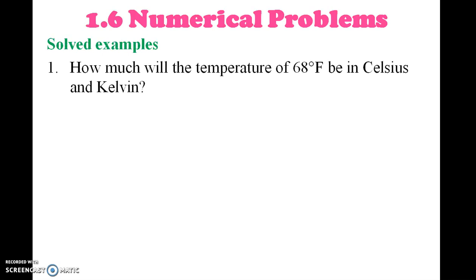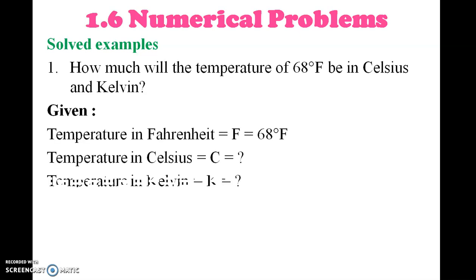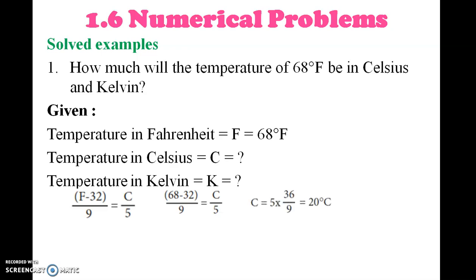Numerical problem: How much will a temperature of 68°F be in Celsius and Kelvin? Solution: using the formula (F − 32) / 9 = C / 5. So (68 − 32) / 9 = 36/9, and C = 5 × 36 / 9 = 20 degrees Celsius. For Kelvin: K = C + 273 = 20 + 273 = 293 Kelvin.